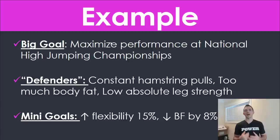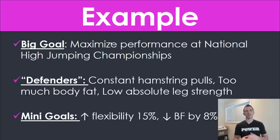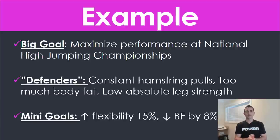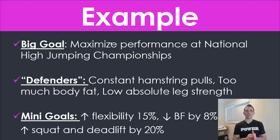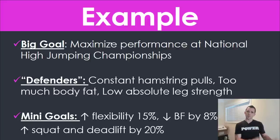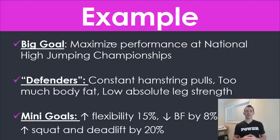You go through each one of those defenders and set a very specific, tangible, and measurable mini goal. For the hamstring pulls, you might say we need to improve hamstring flexibility by 15%. For body fat, you want to reduce it by 8% or 3%. For leg strength, you want to improve your squat and deadlift by 20%. The numbers may be unrealistic, but you get the point: this is what you want, this is what's stopping you, now let's set little goals to knock that down. It gives the athlete, the parent, and the coaches a ton of relief because you have a very specific plan.